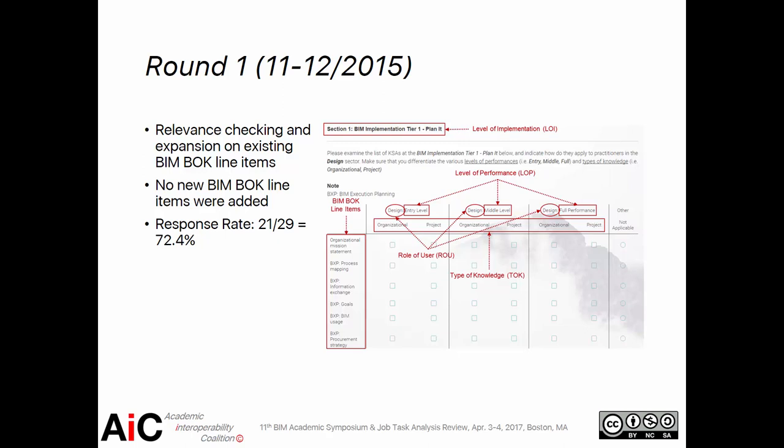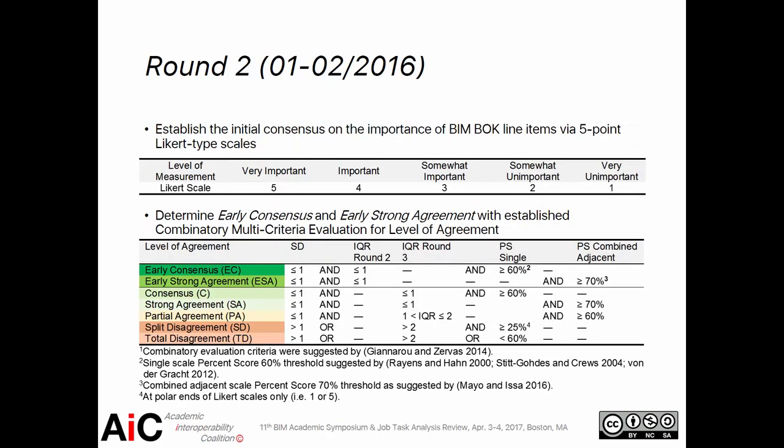The first round, conducted between November and December 2015, focused on relevance checking and expansion on existing BIM Body of Knowledge items using a Qualtrics online survey. No new items were added, and fortunately no pre-established items were removed either. The second round established initial consensus on the importance of BIM Body of Knowledge items via five-point Likert-type scales: very important (5), important (4), somewhat important (3), somewhat unimportant (2), and very unimportant (1). We did not use a neutral scale because literature indicates a neutral Likert level does not encourage cognitive effort. To determine early consensus, we established a combinatory multi-criteria evaluation framework with seven tiers, including early consensus, early strong agreement, consensus or strong agreement, partial agreement, split disagreement, and total disagreement, using statistics including standard deviation, interquartile range, percent score, and percent score combined.